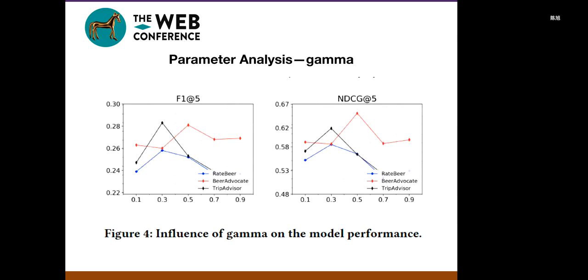The last parameter is gamma and we can see gamma can be different. The optimal gamma for different datasets can be different. For TripAdvisor and RateBeer, smaller gamma can lead to better results, while on BeerAdvocate, moderate gamma is more preferred. This suggests that we should tune gamma in practice more carefully.